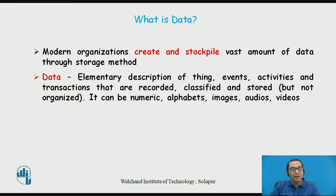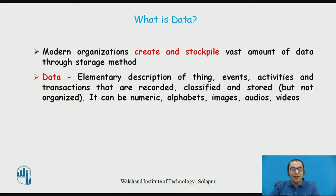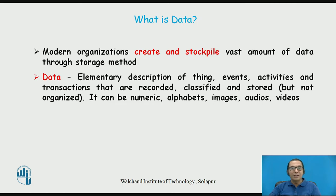There can be many types of data in today's world. We may feel data is only numerical — for example, my bank account number and IFSC code are numerical data. But data can also be alphabets, like my name and address. Data can be images, like my scanned photograph or signature. There can also be audio data and video data — for example, audio and video files we upload or download on Facebook are all examples of data.